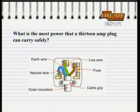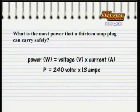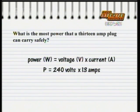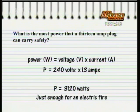What is the most power a fused 13-amp plug can carry safely? We know that power equals voltage times current. In this case, mains voltage is 240 volts, times the 13-amp limit of the plug. That's 240 times 13 equals 3,120 watts. So the safe limit of a 13-amp plug is just over 3 kilowatts — enough for an electric fire.